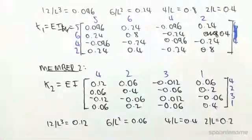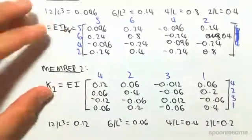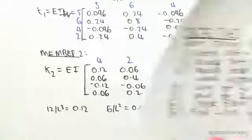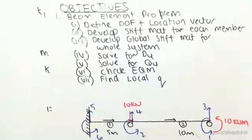Okay, so let's continue on now. So we've got both of our stiffness matrices for member 1 and member 2. We're now going to go to step 3, which is develop a global stiffness matrix with all the corresponding formulas.